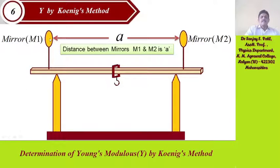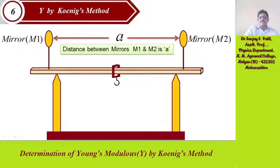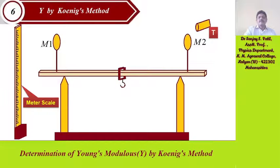In this experiment we will use a meter scale and knife edges for resting the beam. The beam has two mirrors fitted to it — mirror M1 and mirror M2. The distance between the two mirrors M1 and M2 is denoted as small 'a', and there is a hook for attaching weights. There is also a telescope.